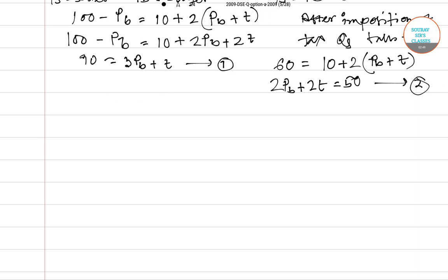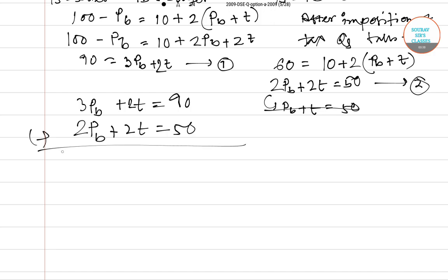Now you have two equations. We have 3PB plus 2T equals 90 from equation one, and 2PB plus 2T equals 50 from equation two. So basically we can simplify it. If you subtract equation two from equation one, then you have PB equals 40.